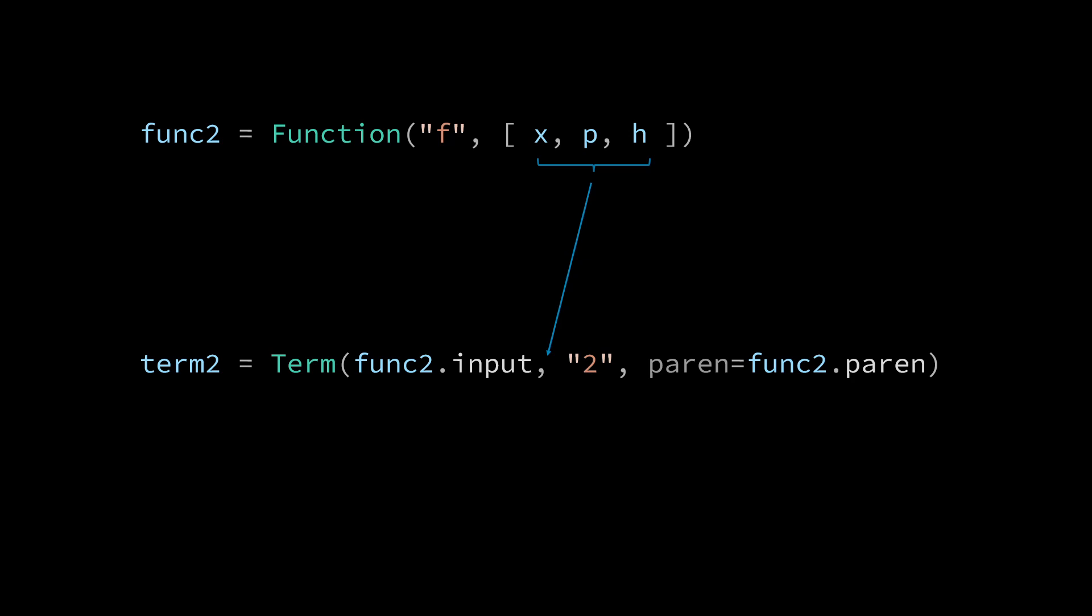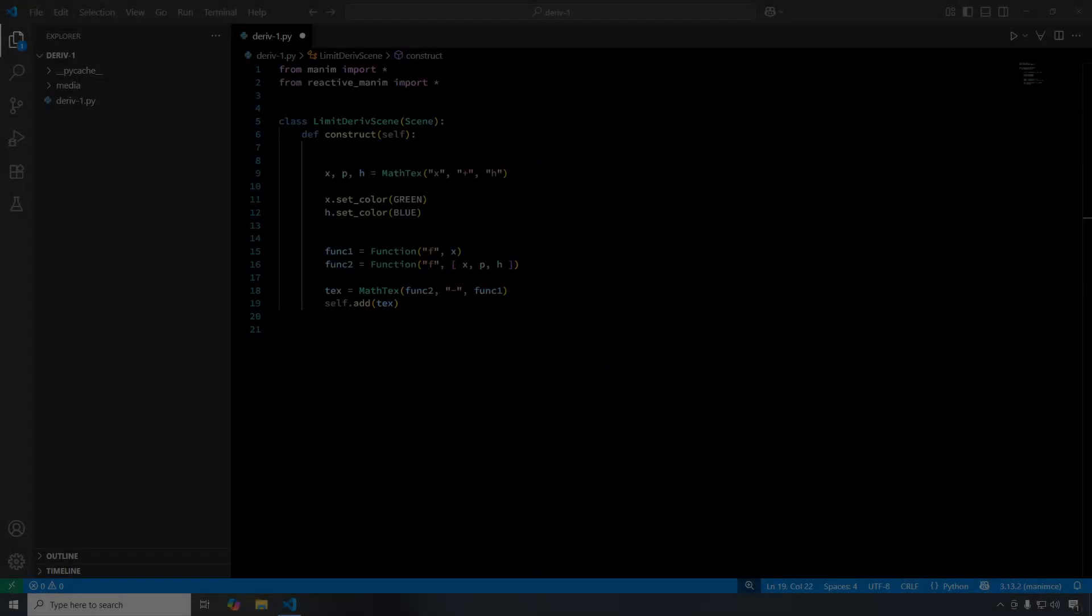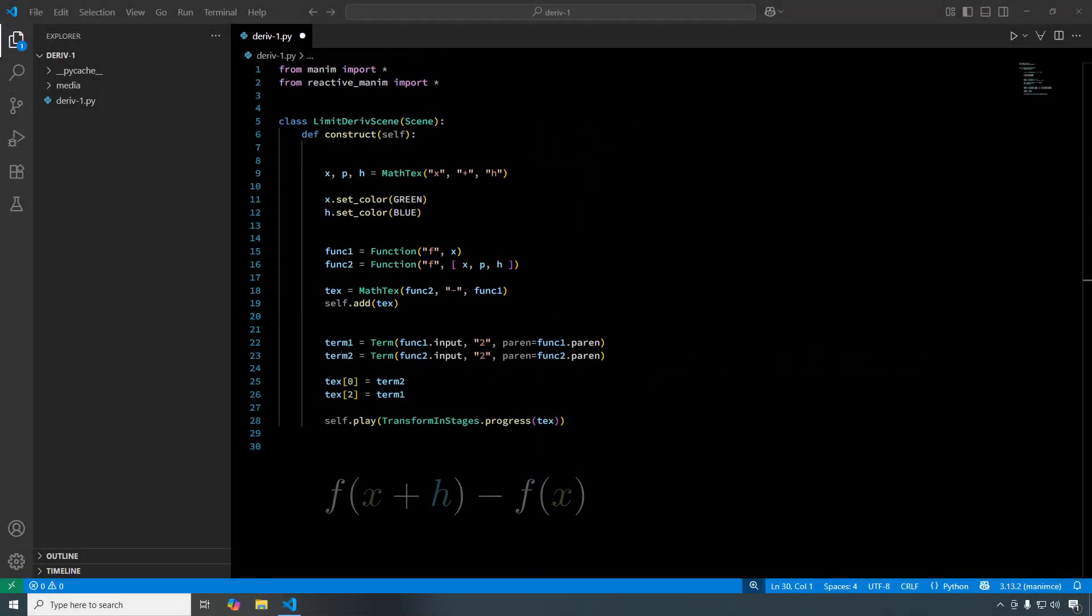The reason for this is that we can still construct the binomial expansion using the x and h references, since the x and h references were transferred to term2 when we constructed term2 with func2.input. Before we move on, you can pause the video if you want to see the full code for this section.